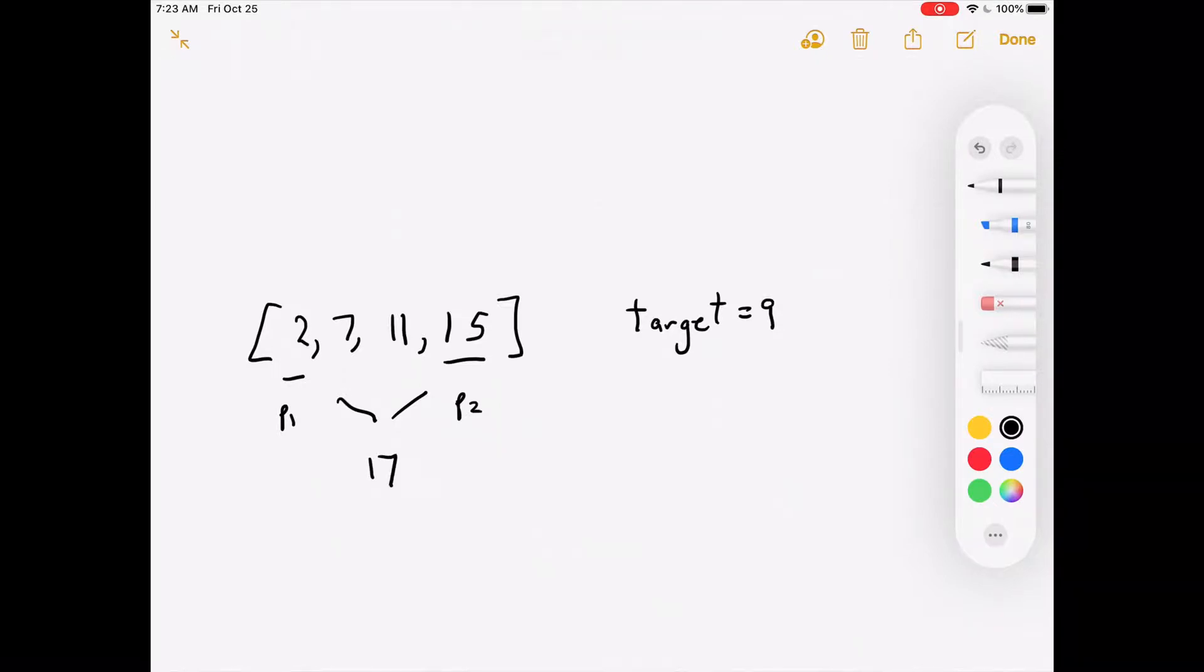In this case, they add up to 17, but the target is nine. So we know that these two elements are greater than the target. What we also know is that the input array is sorted. So what we can do is, since we know that 15 plus two is too much, we can move this down one to something that's less big. So then we add those two up.